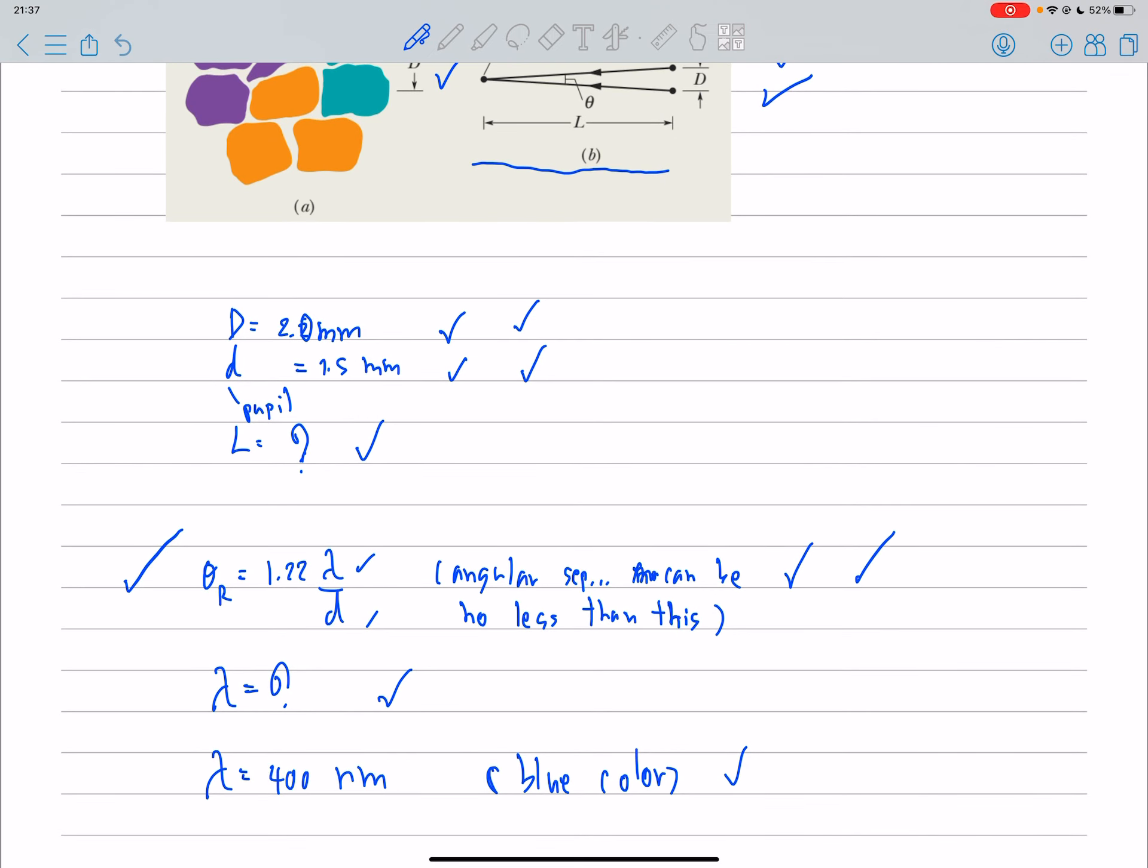From Rayleigh's criterion, and lambda is a blue light, so it's equal to 400 nm.